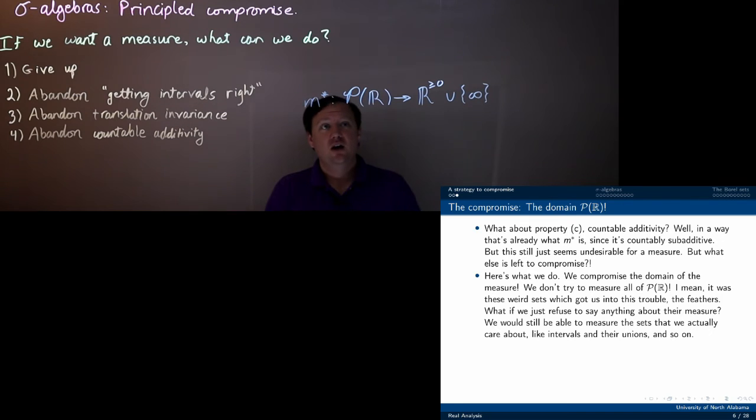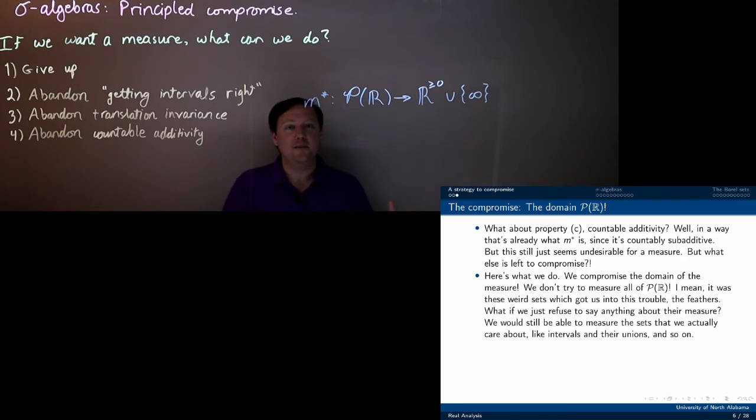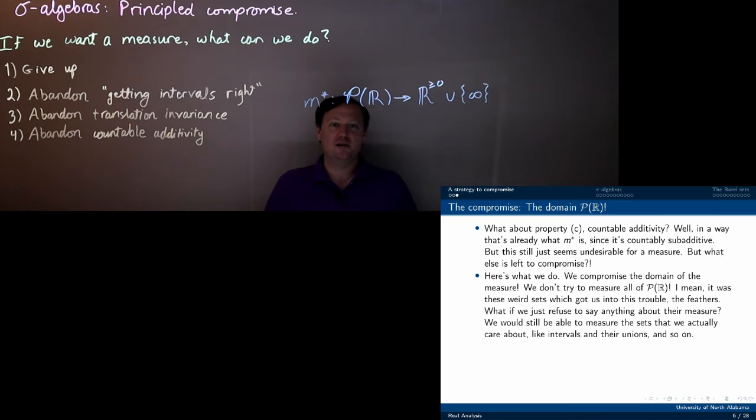The entire problem came from the fact that we had weird sets of real numbers. Those feathers were weird. I didn't discuss it and I still don't want to discuss it, but it does depend on the axiom of choice. You have to make these sort of crazy chaotic choices of representatives from the various cells.